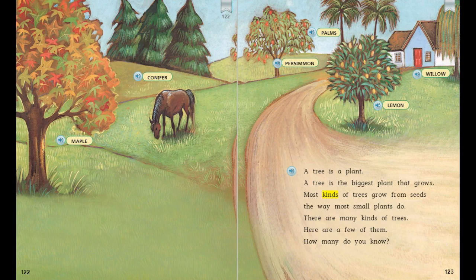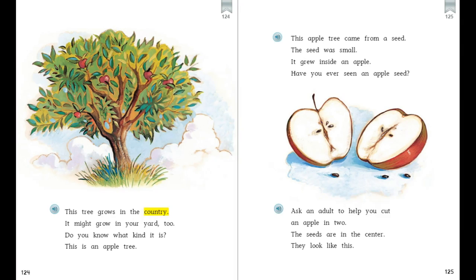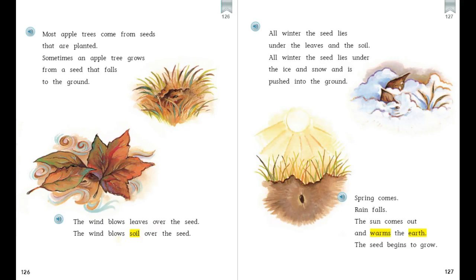Now that you've read the entire text, 'A Tree is a Plant,' we're going to think through the text. Pause the video, think about what you read, and answer and discuss each question with your learning adult. Think about what you read about trees: What do you think these trees grow from? Why are there labels on pages 122–123, and how do the labels help you find information? How does the seed go from an apple to growing into the ground?